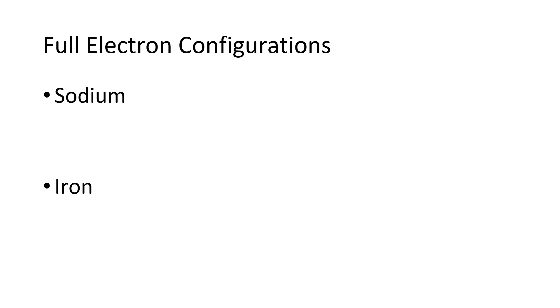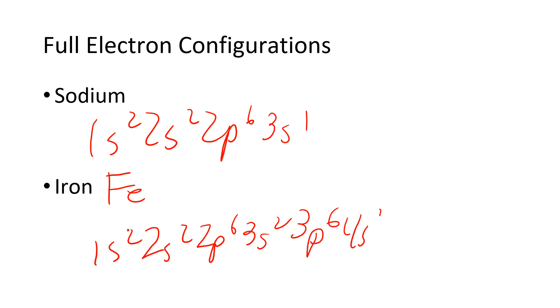So full electron configurations. Looking at your periodic table. Sodium: 1s2, 2s2, 2p6, 3s2. Iron is Fe: 1s2, 2s2, 2p6, 3s2, 3p6, 4s2, 3d6.